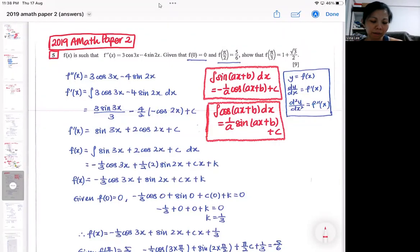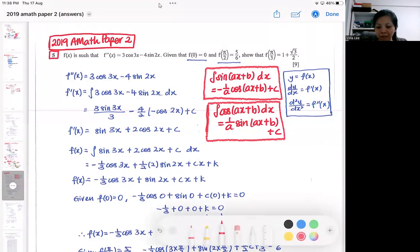Okay, so this question is a nine marks question. You might find that why is it so short and then it's going to cost you nine marks. Okay, so basically there's a lot of integration because it starts off with a second derivative.